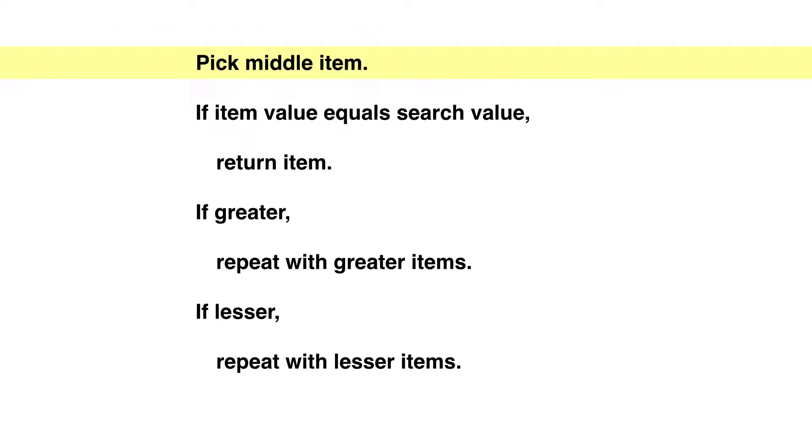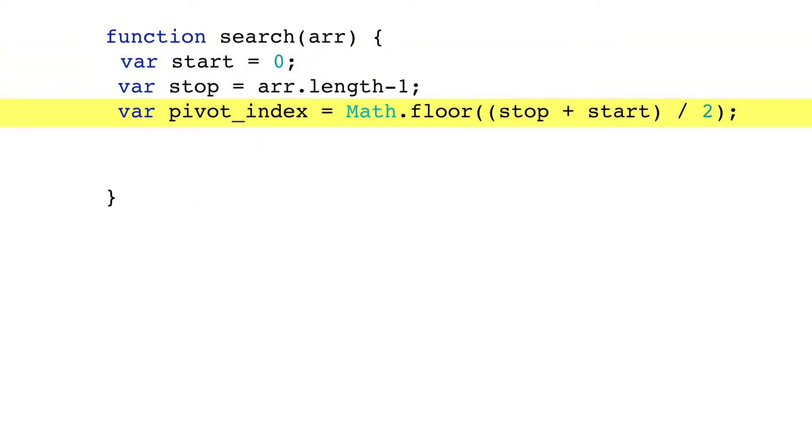Now let's code the core logic. First, we need to pick a pivot. That's easy. Find the midpoint between stop and start, then round down if necessary.